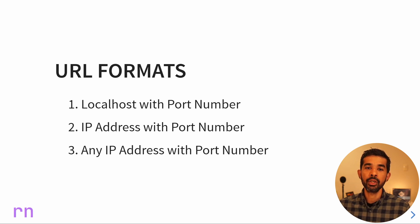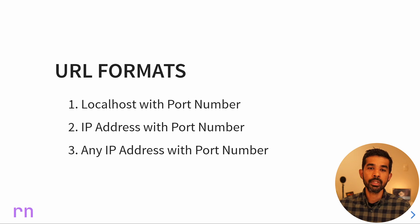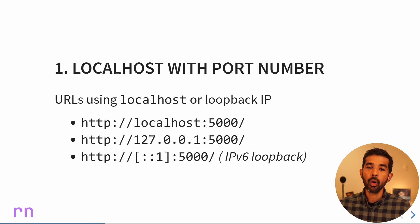These are broadly classified into three categories. You can either specify a localhost with a specific port number, which is what the default one does. You can also specify an explicit IP address followed by a port number, or you can map to any of the IP addresses on your machine, again with the port number. The localhost format contains the word localhost or the loopback IP 127.0.0.1, with a specified port number.